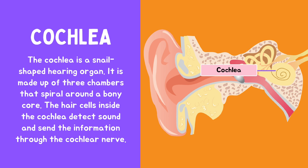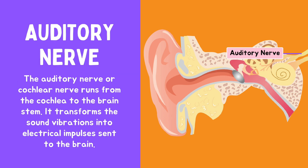The cochlea is a snail-shaped hearing organ. It is made up of three chambers that spiral around a bony core. The hair cells inside the cochlea detect sound and send the information through the cochlear nerve.